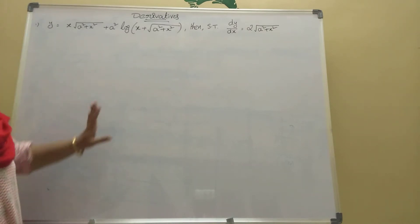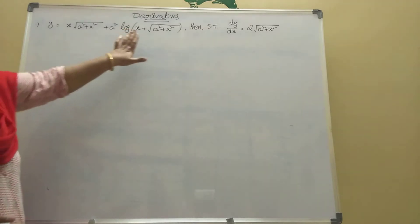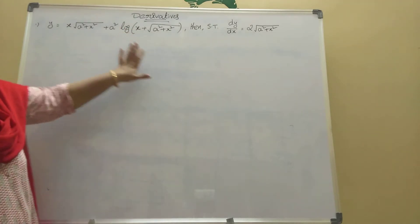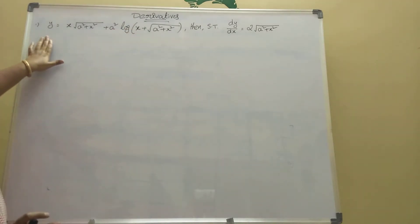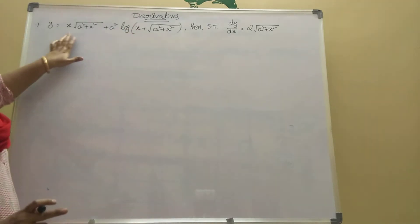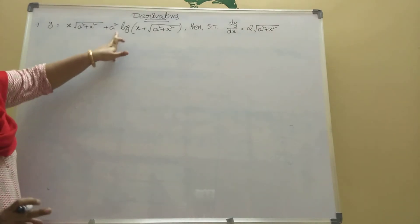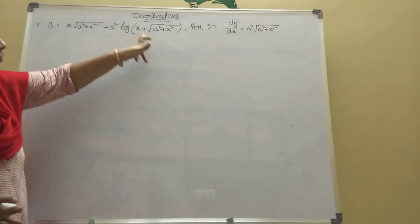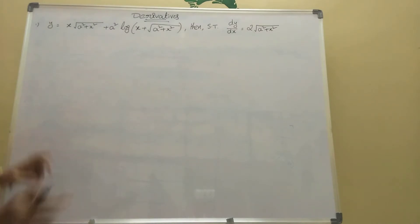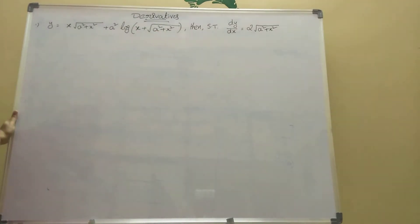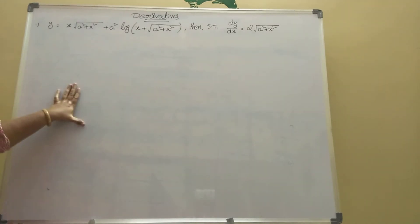Today I am discussing 1b. In 1b part, derivatives are explaining. Given y equal to x into root of a square plus x square, plus a square into log of x plus root of a square plus x square. Then we will prove that derivative of y equal to 2 into root of a square plus x square. This is a 7 marks sum, but it is very important sum.